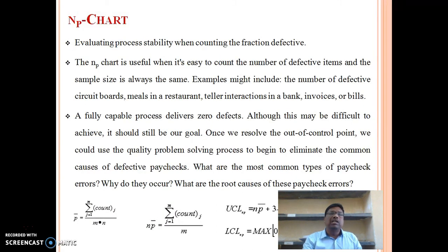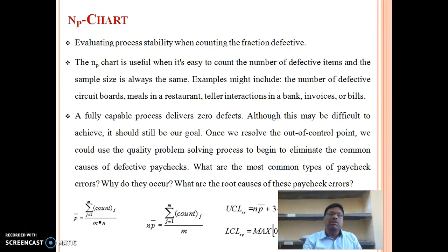The NP chart is used for counting the number of defective items, and in this chart the sample size is always the same. Examples include the number of defective circuit boards, defective meals in a restaurant, errors in bank transactions, or incorrect invoices or bills. A fully capable process delivers zero defects. Although this may be difficult to achieve, it should still be our goal. Once we resolve out-of-control points, we can use the quality problem-solving process to eliminate common causes of defects.